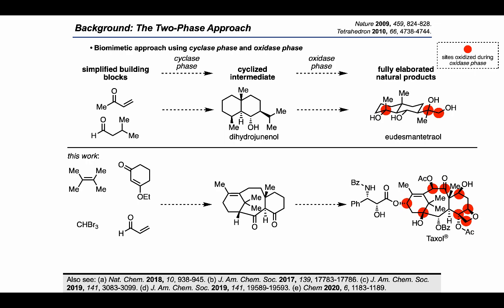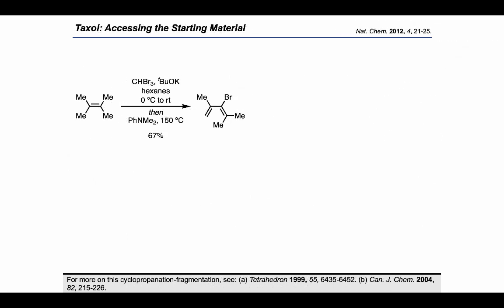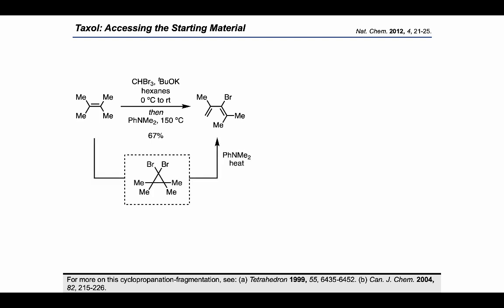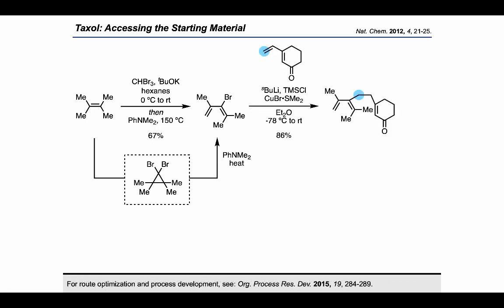In a Nature Chemistry paper from 2012, the group established a route to the key cyclic intermediates. Starting from a tetrasubstituted alkene, they treated with bromoform and potassium tert-butoxide followed by dimethylaniline, resulting in the formation of a brominated diene. This reaction can be understood as an initial cyclopropanation to form a dibromocyclopropane, followed by an elimination reaction upon treatment with dimethylaniline and heat. Fragmentation through the electron flow shown then leads to formation of the product. The bromodiene could then be utilized in a 1,6-addition.